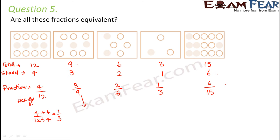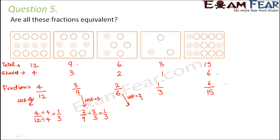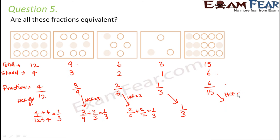For 3 by 9, the HCF is 3, so dividing gives 1 by 3. For 2 by 6, the HCF is 2, so dividing gives 1 by 3. The fraction 1 by 3 is already in its simplest form. For 6 by 15, the HCF is 3, so dividing the numerator and denominator by 3 gives 2 by 5.